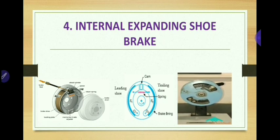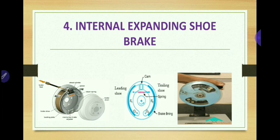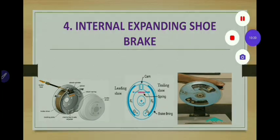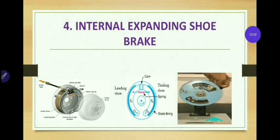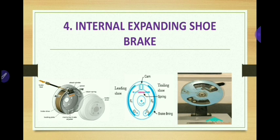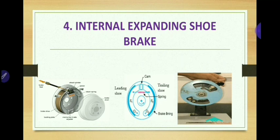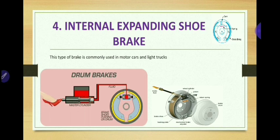When the wheel rotates in anti-clockwise direction, the left-hand shoe is known as the leading shoe or primary shoe, while the right-hand shoe is known as the trailing shoe. The leading shoe makes contact with the rotating drum first, so more wear occurs on the leading shoe than on the trailing shoe. In the animation below, you can observe that when the operator presses the brake, the cylinder is actuated and the two brake shoes are pressed against the rotating drum, applying the brake.